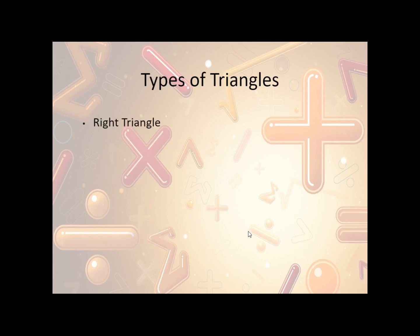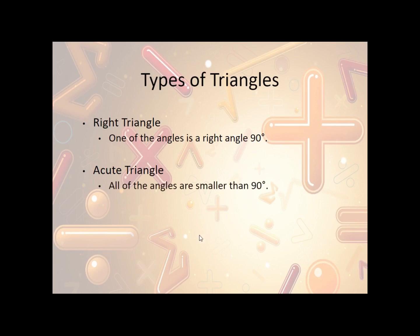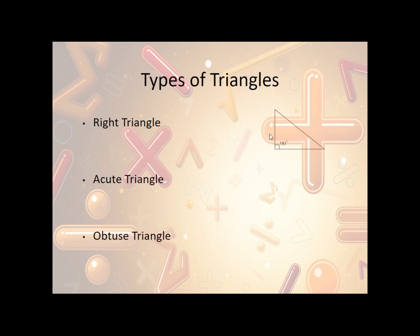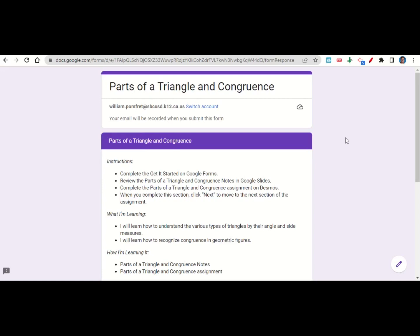Other types of triangles are classified by their angles. A right triangle has one angle that is exactly 90 degrees. An acute triangle has all angles smaller than 90 degrees — for example, all 60 degrees, though they don't all have to be equal, just all smaller than 90. An obtuse triangle has one angle bigger than 90 degrees. You can tell because if you were to draw a right angle, the obtuse angle is clearly bigger than that.